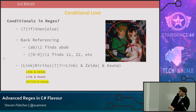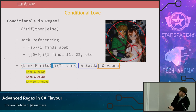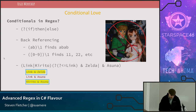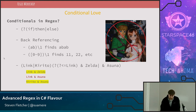For conditionals, I could say I'm going to capture whatever the first word of a sentence is — 'link' or 'kirito' — and then conditionally: if what I found in the look behind was the word 'link', then capture 'and Zelda', otherwise capture 'and Asana'. So you will get either 'link and Zelda' or 'kirito and Asana'. You will never see 'link and Asana'. Any questions on conditionals? Has anybody ever used a conditional prior to this or even knew it was possible? If you use regular expressions at all, definitely play with conditionals because it gives you all kinds of flexibility.